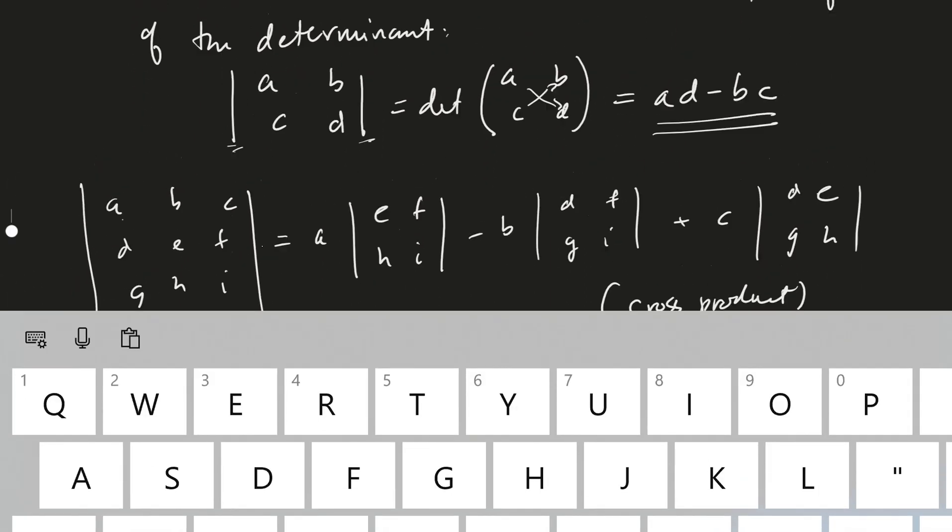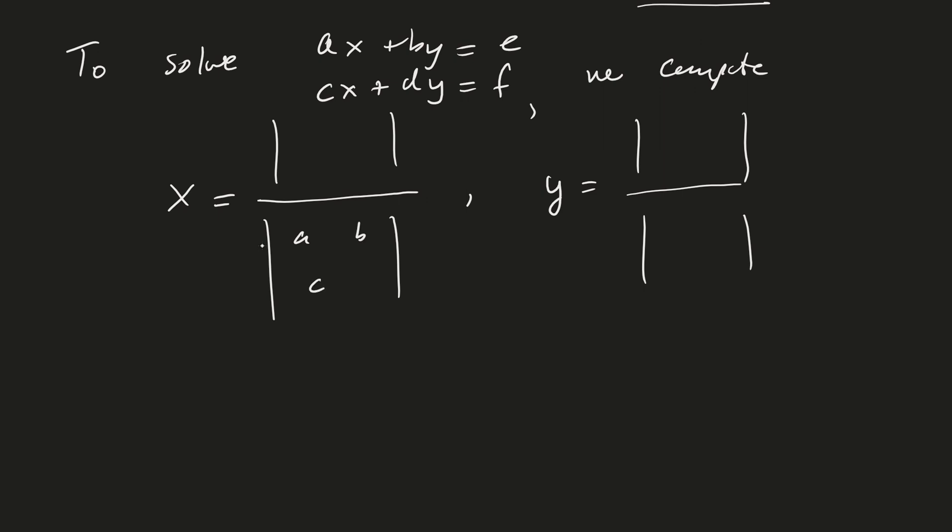So now let's get back to our system of equations. To solve AX plus BY equals E and CX plus DY equals F, we compute X to be equal to, and it's just a determinant divided by a determinant, and Y is also a determinant divided by a determinant. In the denominator, it's the determinant of the coefficient matrix, the ABCD, or just the coefficients ABCD. And so you put that in the other denominator as well.